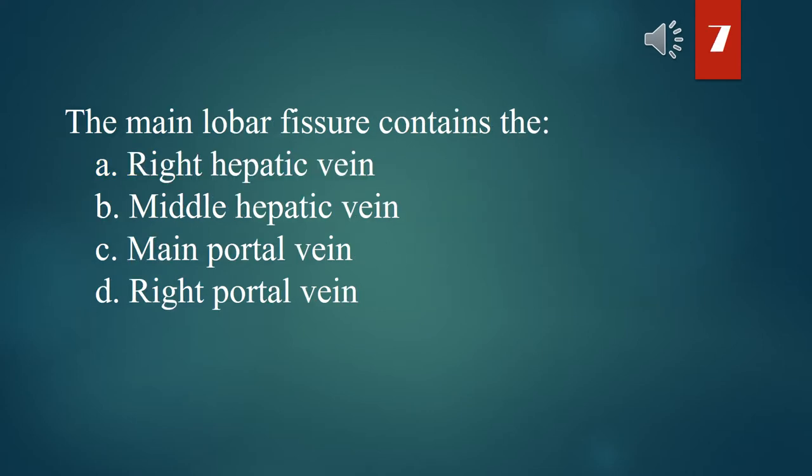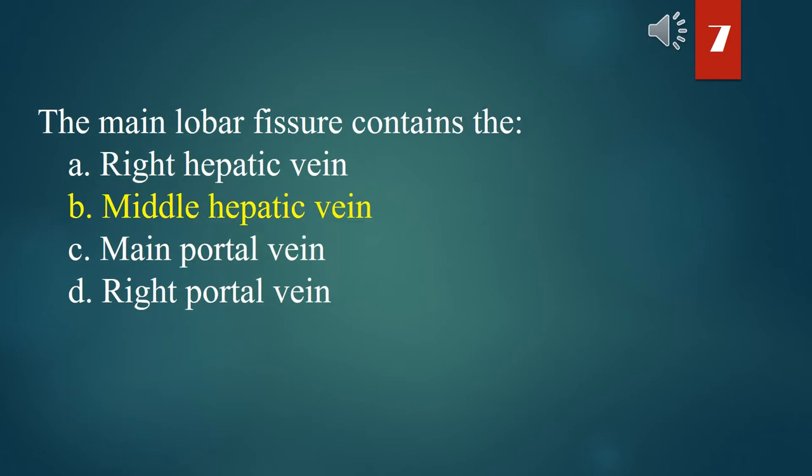The main lobe fissure contains the: A. Right hepatic vein. B. Middle hepatic vein. C. Main portal vein. D. Right portal vein. The answer is B. Middle hepatic vein.